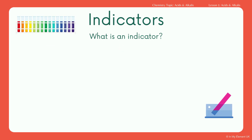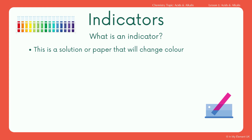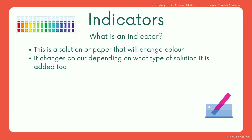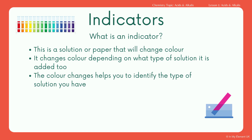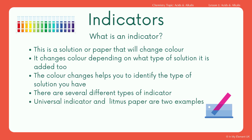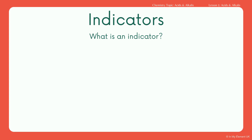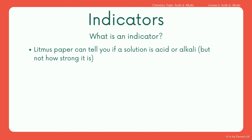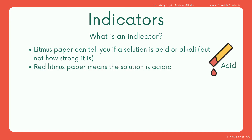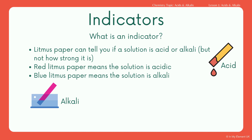To do that, you need an indicator. An indicator is a solution or a specific type of paper that will change colour when added to a solution — you'll either drop the solution in or add the paper to the solution, and the colour change helps you identify the type of solution you have. There are several different types of indicator. The two main ones are universal indicator and litmus paper. Litmus paper won't tell you the strength; it will just tell you if the solution is acid or alkali. Red litmus paper tells you the solution is acidic, and blue litmus paper tells you the solution is alkaline.